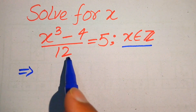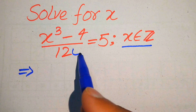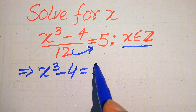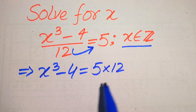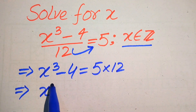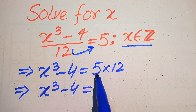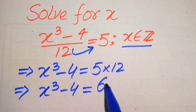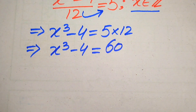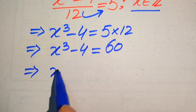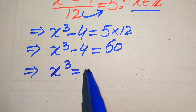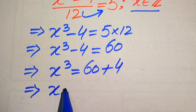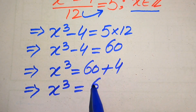In this method, we first move the 12 to the right-hand side — when we move it to the right-hand side it is multiplied by 5, so it becomes 5 × 12. Now we have x³ - 4 = 5 × 12, and 5 × 12 becomes 60. In the next step, we move the -4 to the right-hand side, giving x³ = 60 + 4, and 60 + 4 becomes 64.